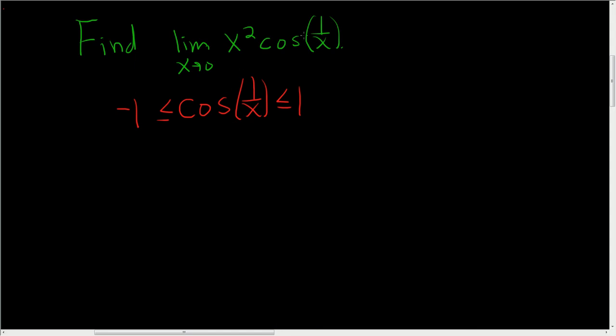Now we want to incorporate our function here. You can see that the only thing missing is x squared, so we'll multiply everything by x squared. We end up with negative x squared less than or equal to x squared cosine 1 over x less than or equal to x squared.